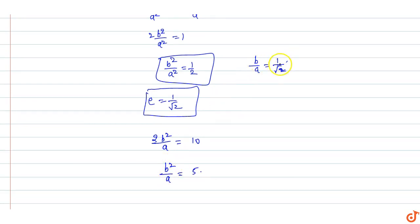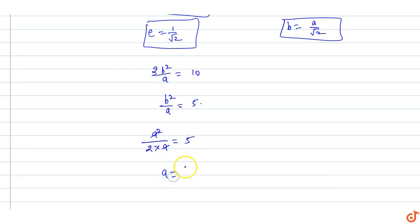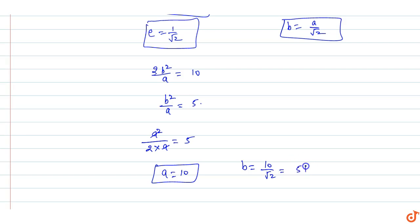Since b = a/√2, we substitute: b² = a²/2. Putting this into b²/a = 5 gives (a²/2)/a = 5, so a/2 = 5, meaning a = 10. Then b = a/√2 = 10/√2 = 5√2. So b equals 5 root 2.